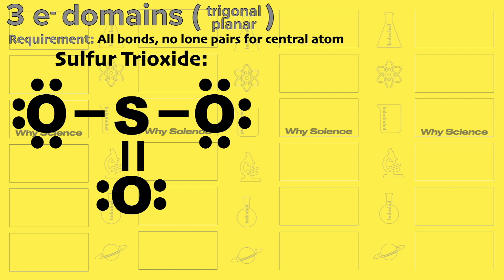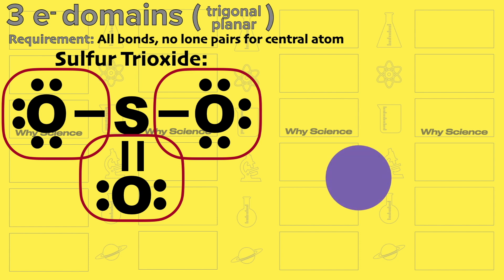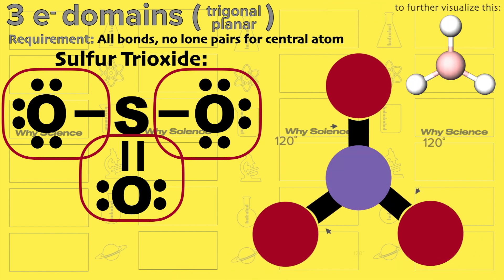Sulfur has no lone pair but it has three oxygen atoms bonded to it. Here we have the sulfur as the central atom, then we add the three oxygen atoms and it should look like this.